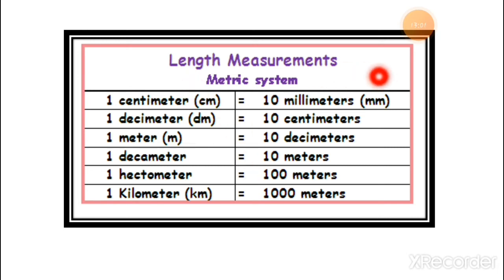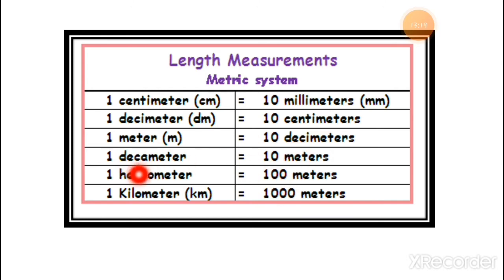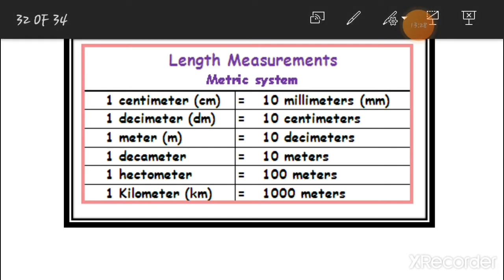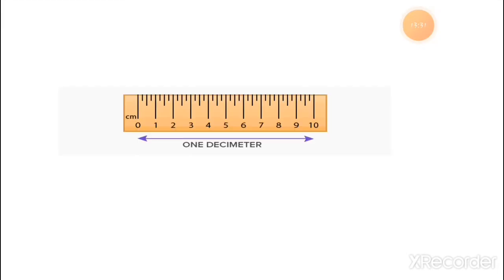I have a length measurement chart. 1 centimeter (cm) means 10 millimeters (mm). 1 decimeter means 10 centimeters. 1 meter means 10 decimeters. This is just for information — this thing will not come in the exam, but it is good for you to know. Here is a scale from 1 to 10, and that means 1 decimeter. I hope you all understood the concept of length very well.